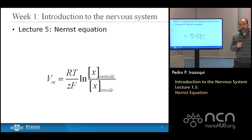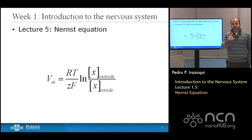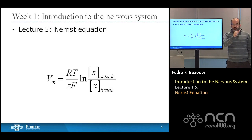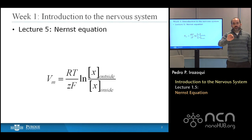So in the last lecture, we discussed the resting membrane potential and how that resting membrane potential comes about because of two things. One, a concentration gradient from the inside of the cell to the outside of the cell. And two, the fact that the membrane that separates the inside and the outside of the cell is semi-permeable to the ion with which there's a concentration gradient.